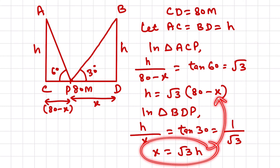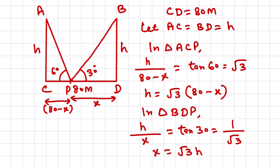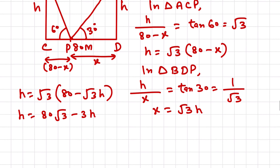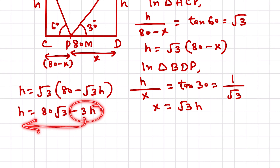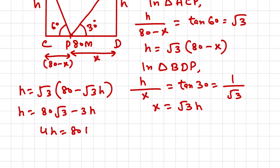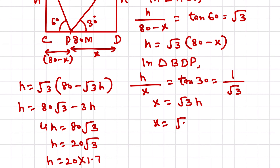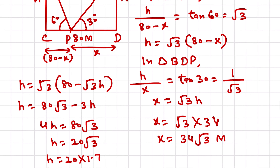Putting x = root 3 × h into the first equation: h = root 3 × (80 - root 3 × h), giving h = 80 root 3 - 3h. So 4h = 80 root 3, and h = 20 root 3. If we take 1.7 for root 3, h = 20 × 1.7 = 34 meters. Now x = root 3 × 34 = 34 root 3 meters. This is the answer for question 10.